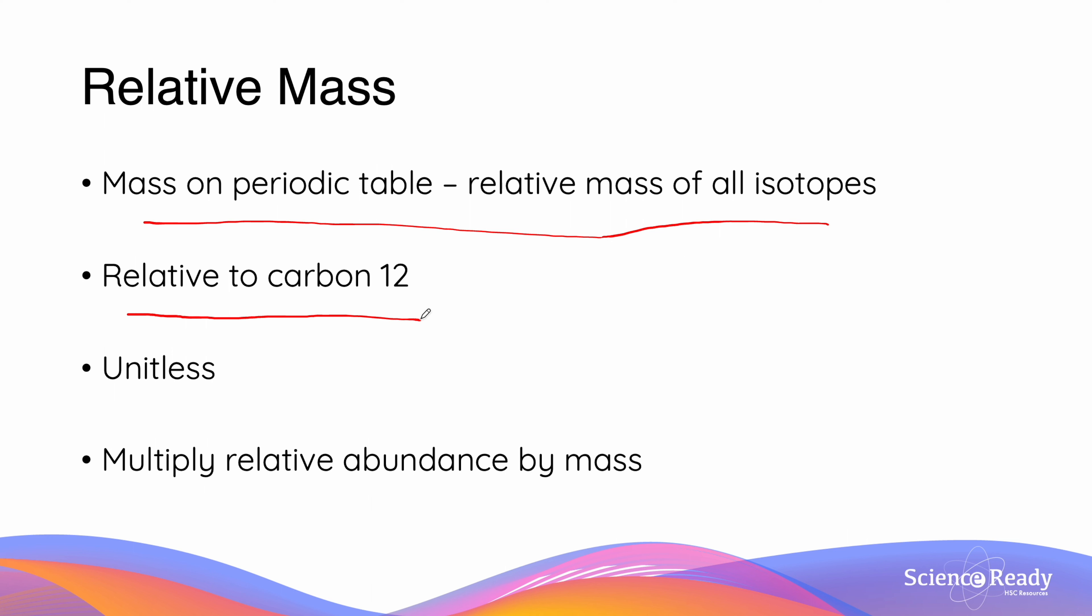Carbon 12 takes on the number 12 and are unitless. So for example, carbon 12 has a mass of 12, which is a mass or the nucleon number, and carbon 13 would have a mass of 13, carbon 14 would have a mass of 14, etc.